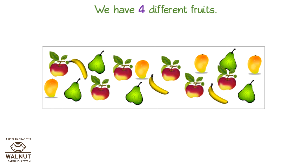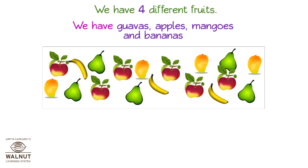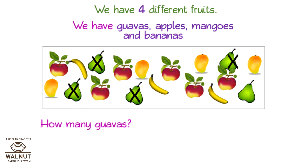We have four different fruits — guavas, apples, mangoes, and bananas. Let us count the number of each fruit. When you count, you can make a cross on a fruit. How many guavas? One, two, three, four, five. We have five guavas.